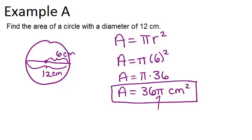I left the answer in terms of pi in order to make it look a little bit neater. But you could multiply out 36 times 3.14159, the approximation for pi, in order to get an approximate answer.